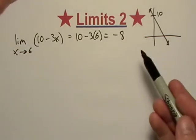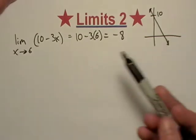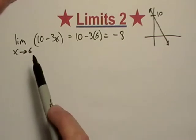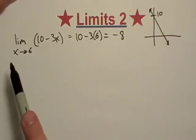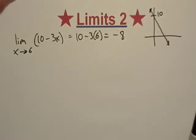And now it just so happens that f of 6 is also equal to negative 8, but try not to confuse f of 6 for the limit as x approaches 6 because we'll find out as we go on, that may not always be the case.